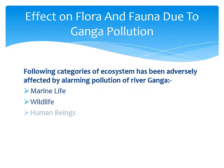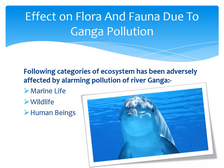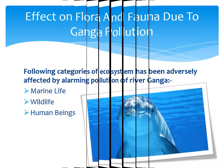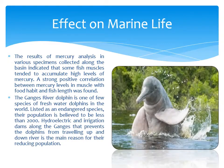Effect on flora and fauna due to Ganga pollution: The following categories of ecosystem have been adversely affected — marine life, wildlife, and human beings. Regarding marine life, results of mercury analysis in various specimens collected along the basin indicated that some fish muscles tended to accumulate high levels of mercury. Hydroelectric and irrigation dams along the Ganga prevent dolphins from traveling up and down the river, which is the main reason for the reducing dolphin population.